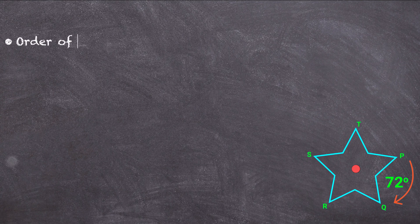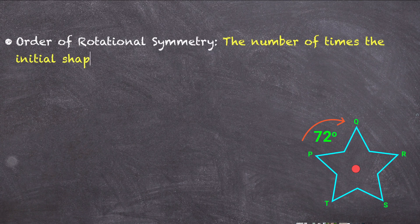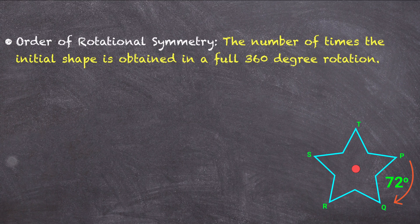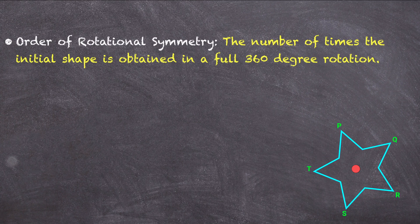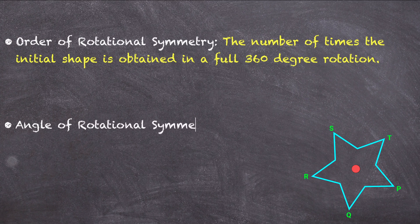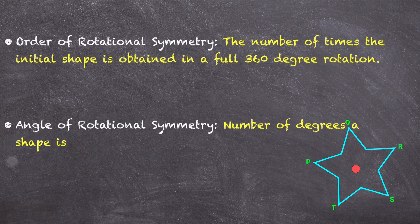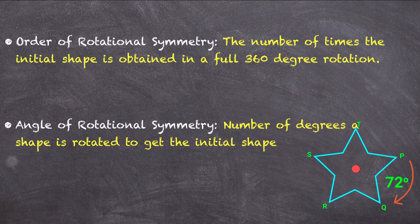The order of rotational symmetry is basically the number of times we get the exact same shape in a full 360 degree rotation. The angle of rotational symmetry is the number of degrees a shape is rotated in order to get the initial shape.